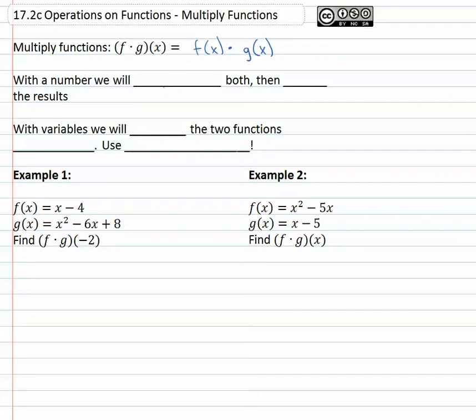And with a number this is very simple, we simply have to evaluate both functions then multiply the results. Find what f of 2 is, find what g of 2 is and then multiply those two answers together.